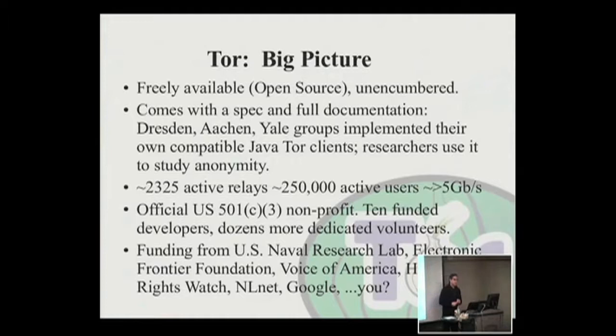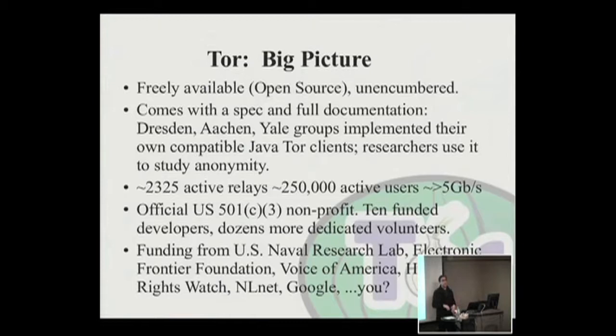The Tor network itself is built from an open specification in an RFC style — with the shoulds, musts, wills, and won'ts. We've had people independently implement Tor as a client that connects to the network. Different implementations of our specification have allowed us to see mistakes in the spec or in our C reference implementation, which has been really helpful. The current count as of last night was 2,325 active relays in the network — quite a lot of people running Tor as a relay wanting to help out.